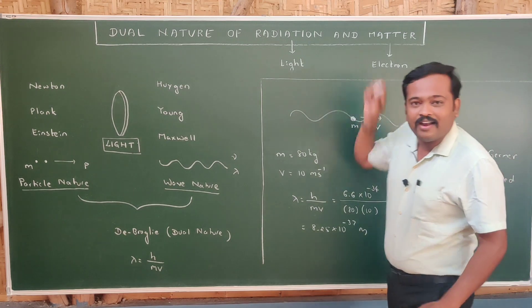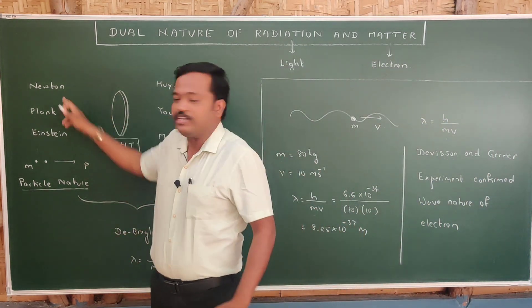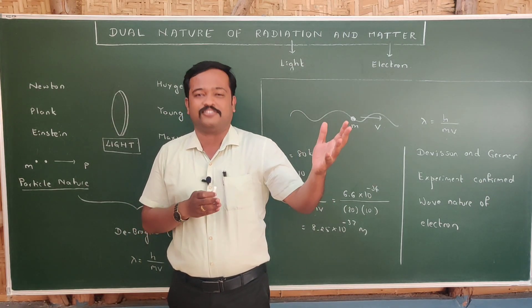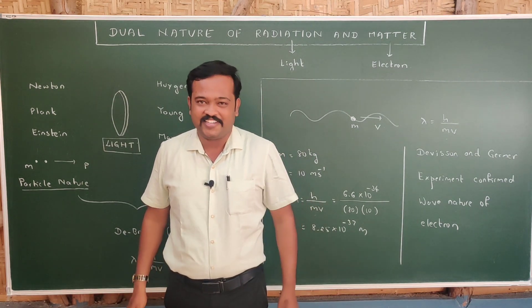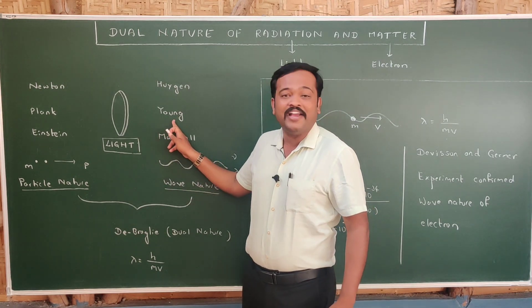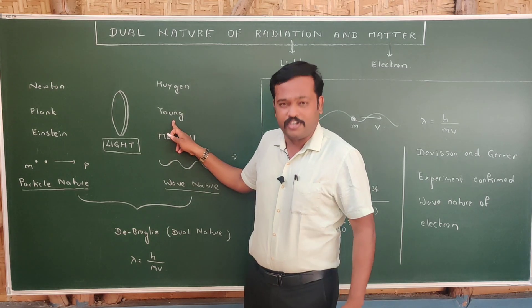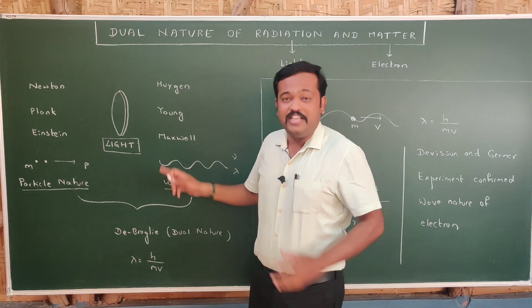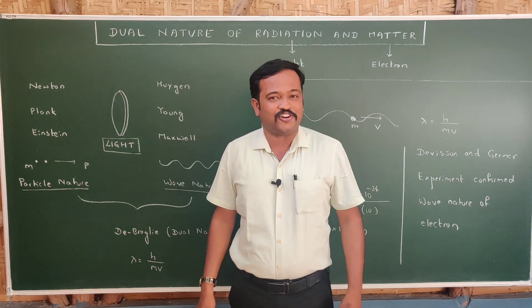Now let us start with light. There were many theories of light. The first theory was given by Newton. In his corpuscular theory, he said that light is made up of particles which he called corpuscles, and he supported the particle nature of light. Then came Huygens, who supported the wave nature of light, which was also supported by Young's double slit experiment, which proved that light has wave nature. Then came Maxwell, who in his electromagnetic wave theory again supported the wave nature of light.